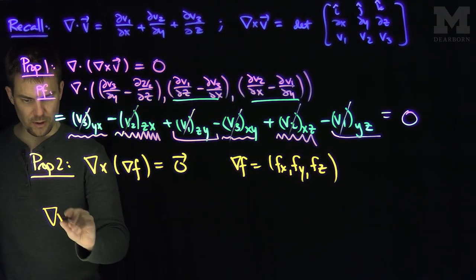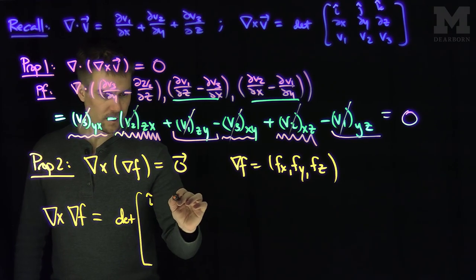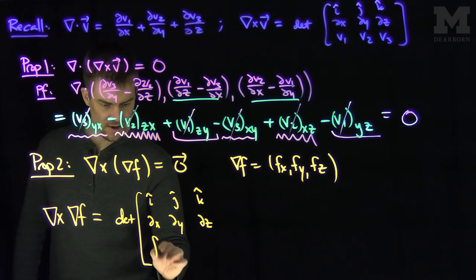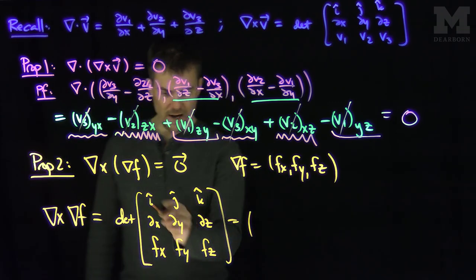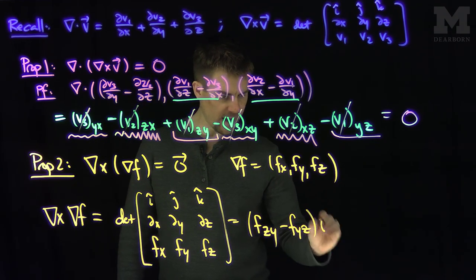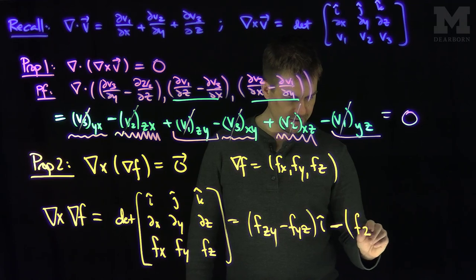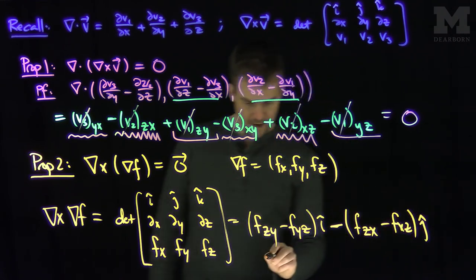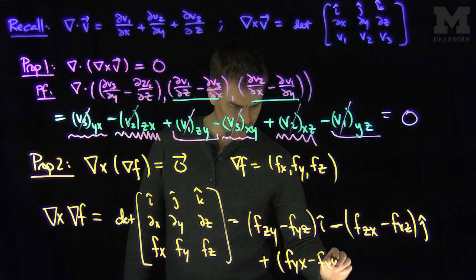So let's do the curl of that gradient. The curl is the determinant with rows i, j, k; operators ∂x, ∂y, ∂z; and fx, fy, fz. The i entry is going to be fzy minus fyz. The j entry (with a negative sign) is fzx minus fxz. And the k entry is fyx minus fxy.